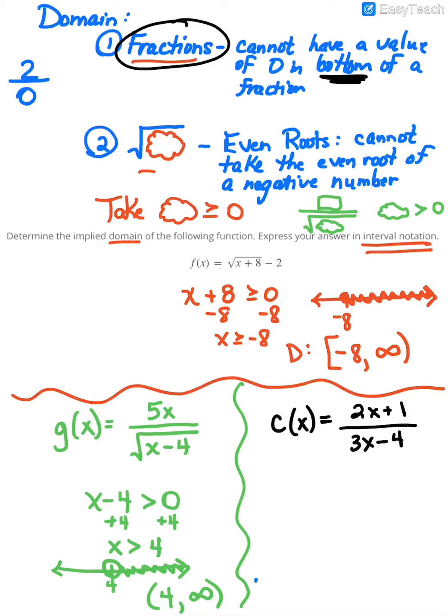In this case, what we do is whatever's on bottom, we're going to say it cannot equal 0. Since we don't have a square root this time, we don't want to say greater than 0, we're just saying the bottom cannot be 0. So we say cannot equal 0, and then we solve it. If I add 4 to both sides, then 3x cannot equal 4.